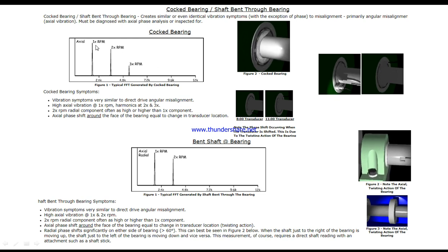Cock bearing shows high vibration at 1x RPM with harmonics at 2x and 3x RPM. 2x RPM is often as high or higher than 1x RPM. Axial phase shift around the face of the bearing equals the change in transducer locations depending on how cocked it is or how bad it is. Here is a bearing where you have to note the axial twisting action, and you can see here how it is shifted.